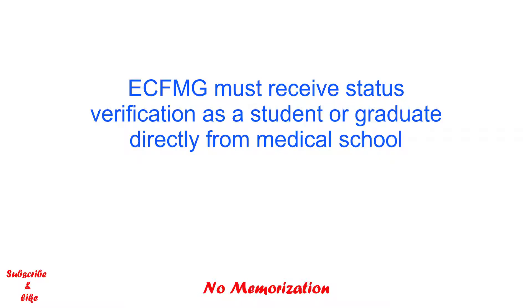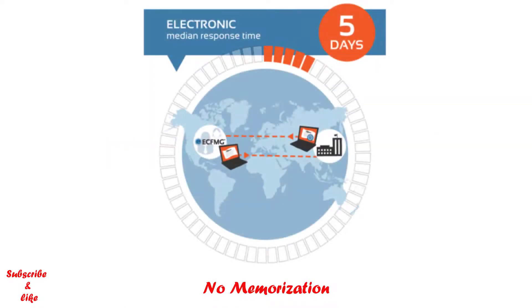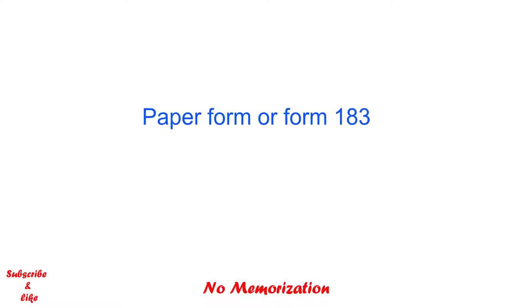There are two ways ECFMG can request this verification, and it depends on the applicant's medical school. The first way is that a medical school official can do it electronically through ECFMG's medical school web portal status verification program. It is a fast and convenient way, as it only takes five days to complete. But many medical schools do not participate in this program and prefer to do it via paper form, which is known as Form 183.